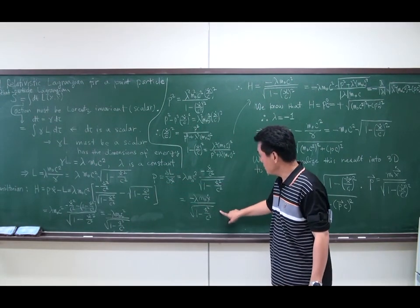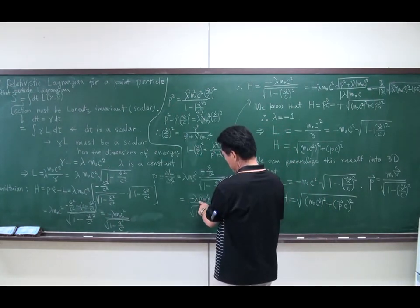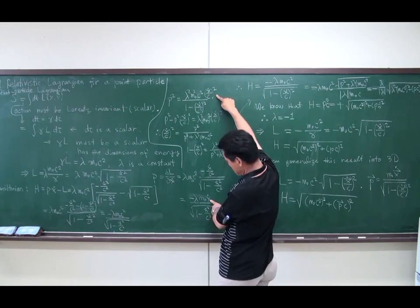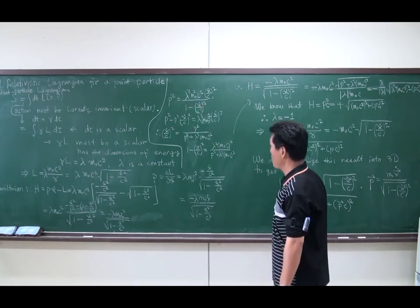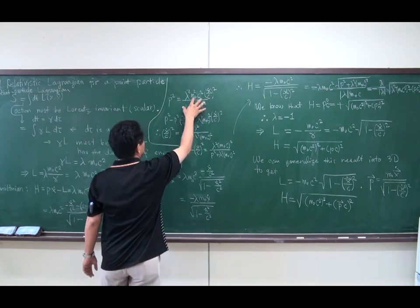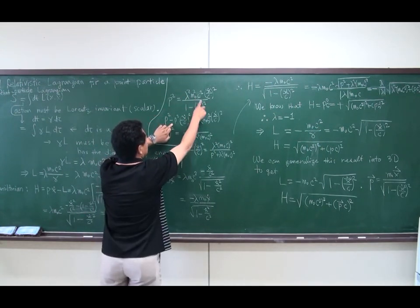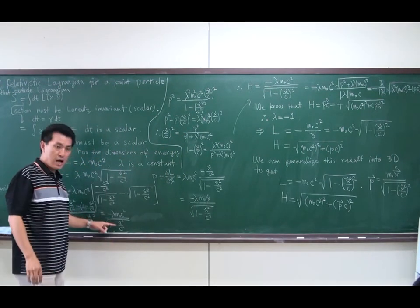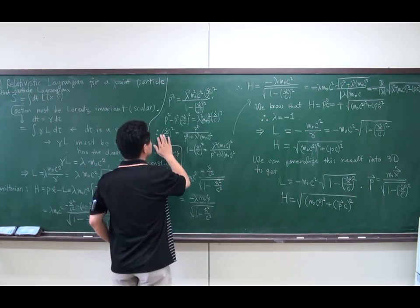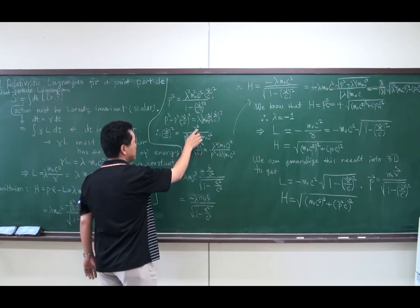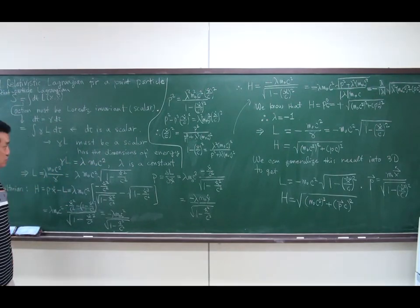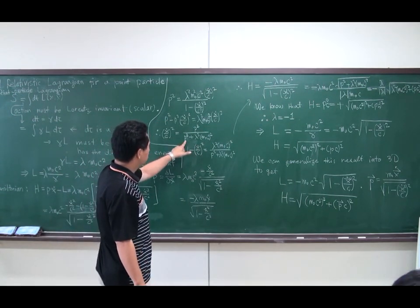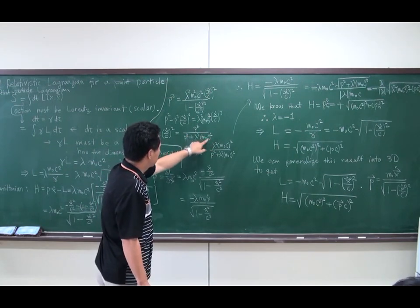The Hamiltonian must be expressed as a function of momentum p rather than velocity. Squaring p gives p² = lambda²·m₀²·c²·(ẋ²/c²)/(1 − ẋ²/c²). Multiplying the denominator to both sides, then collecting terms, we find that ẋ²/c² = p²/(p² + lambda²·m₀²·c²). Then 1 minus this quantity has lambda²·m₀²·c² in the numerator. Flipping numerator and denominator and taking the square root, we find the gamma factor expression.